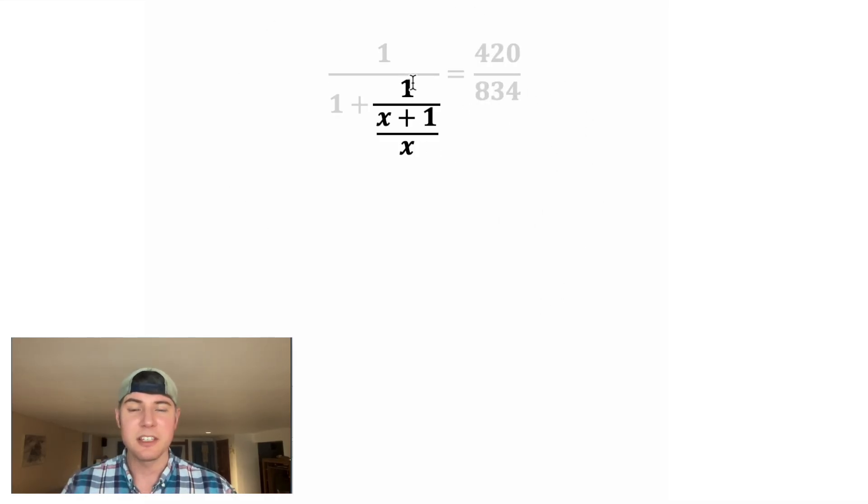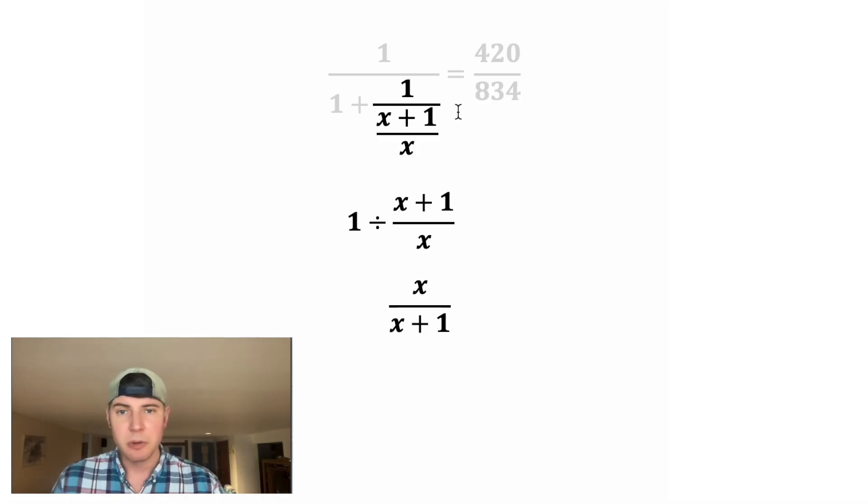Now let's focus on this right here. This is basically saying 1 divided by x plus 1 over x. The division of a fraction is the same thing as multiplying by the reciprocal. So if we change this divide into a multiply, we can flip this fraction. And 1 times this is just this. So we want to rewrite this whole thing as x over x plus 1. And let's get rid of this stuff.